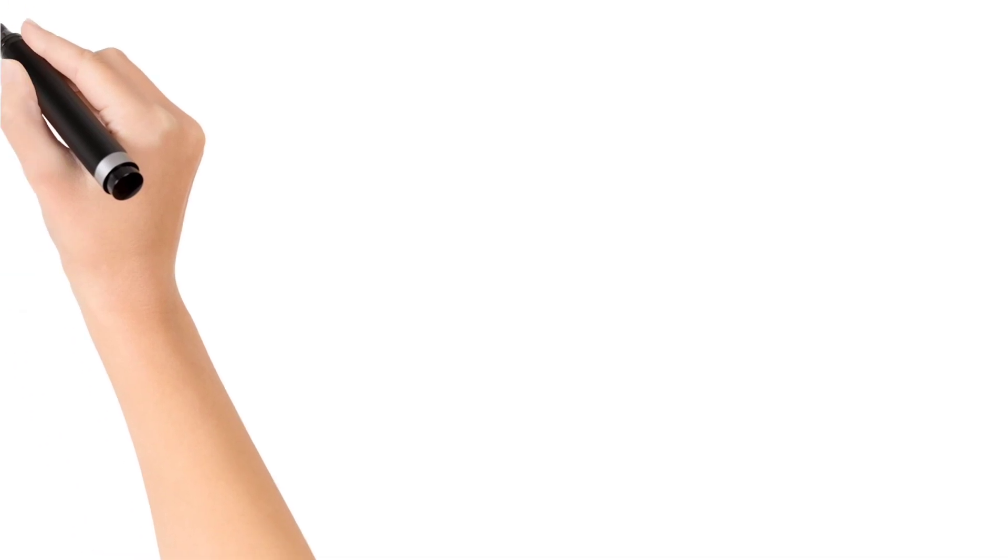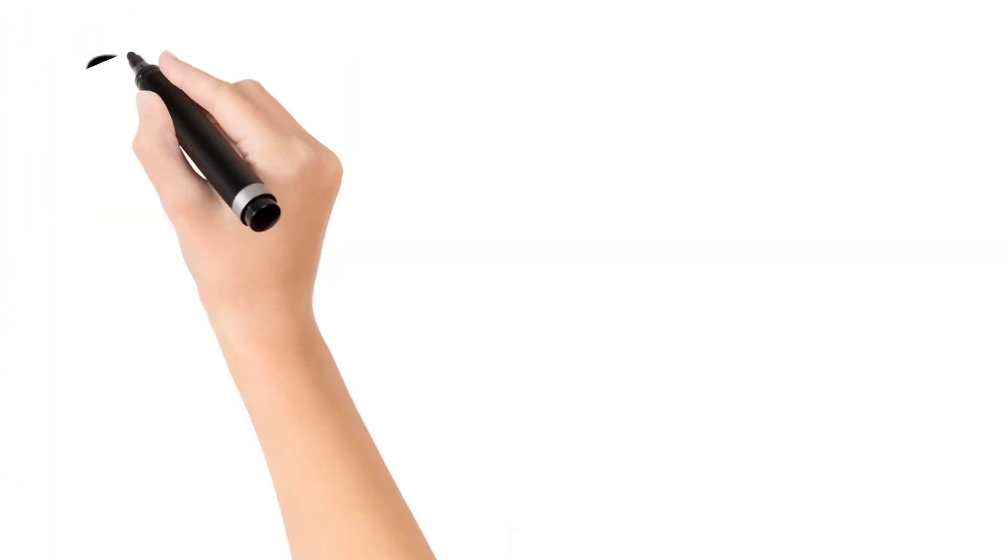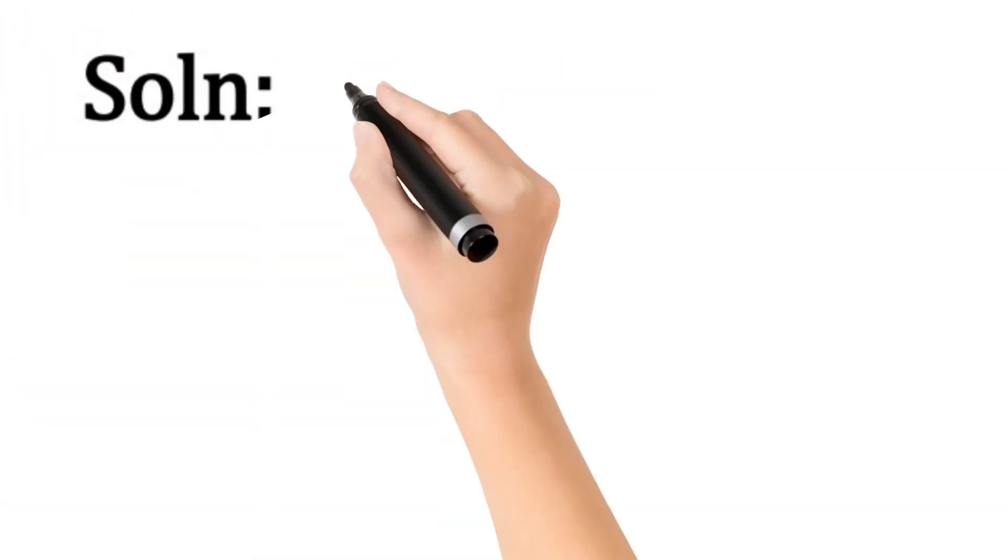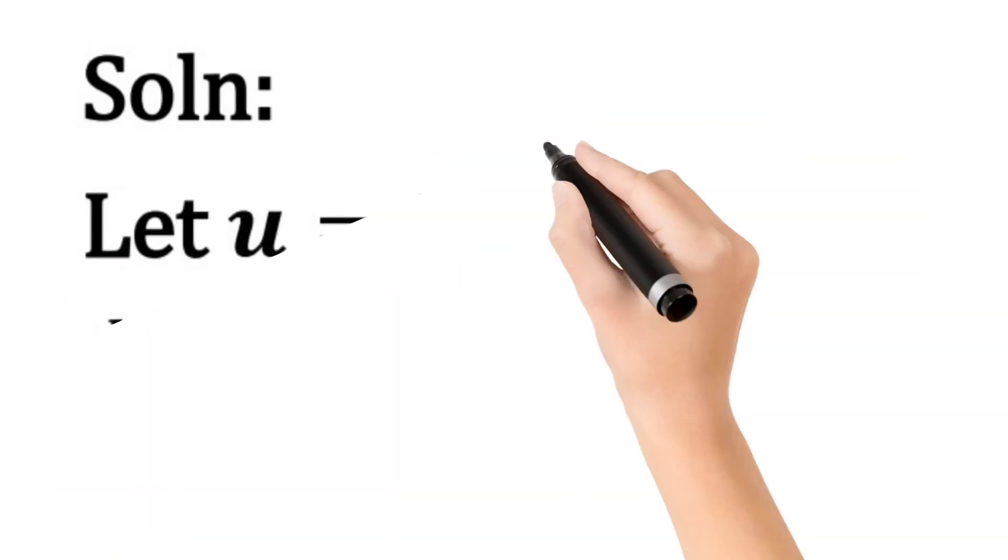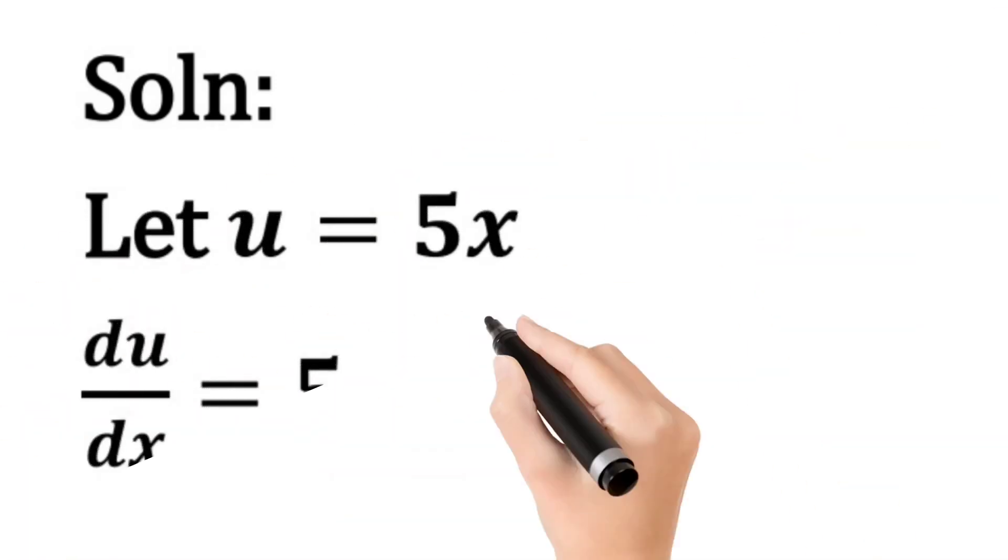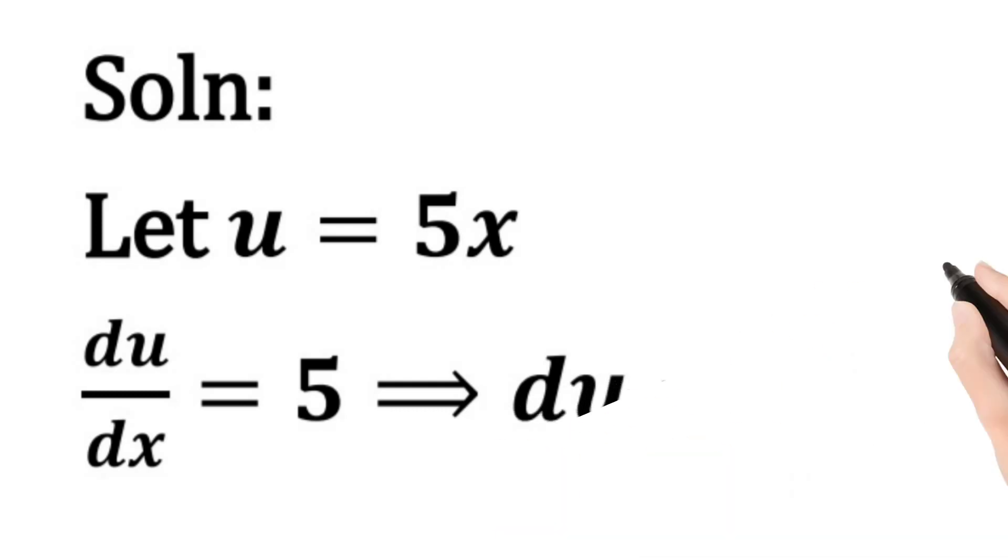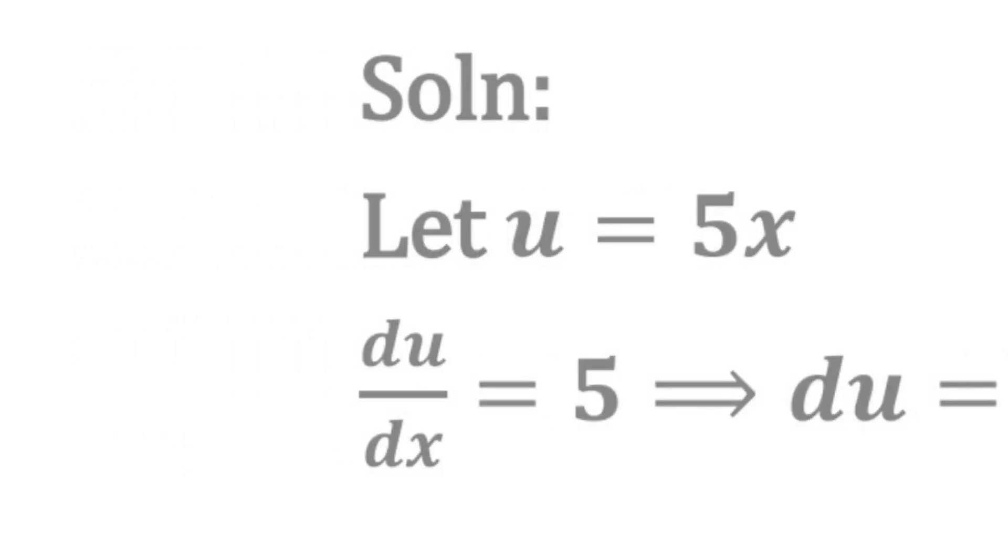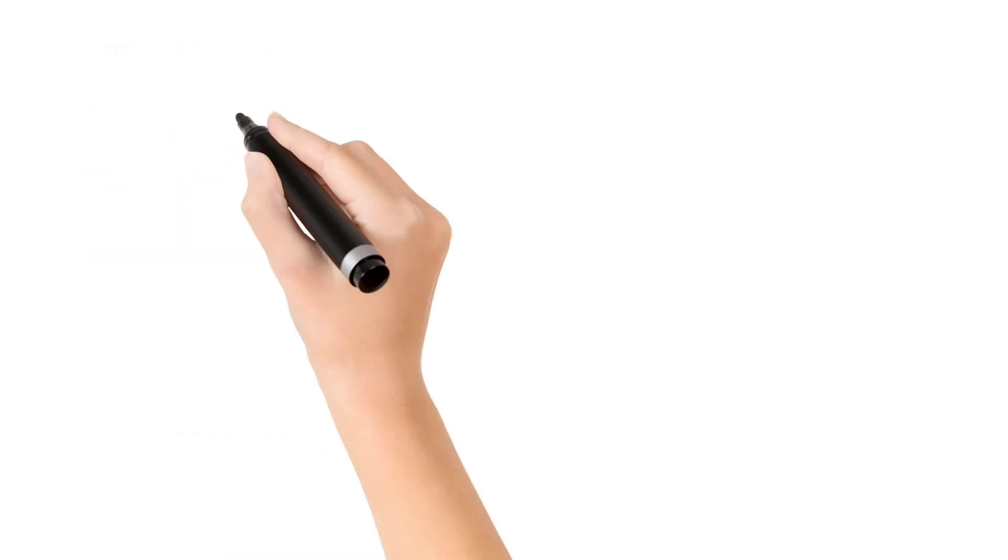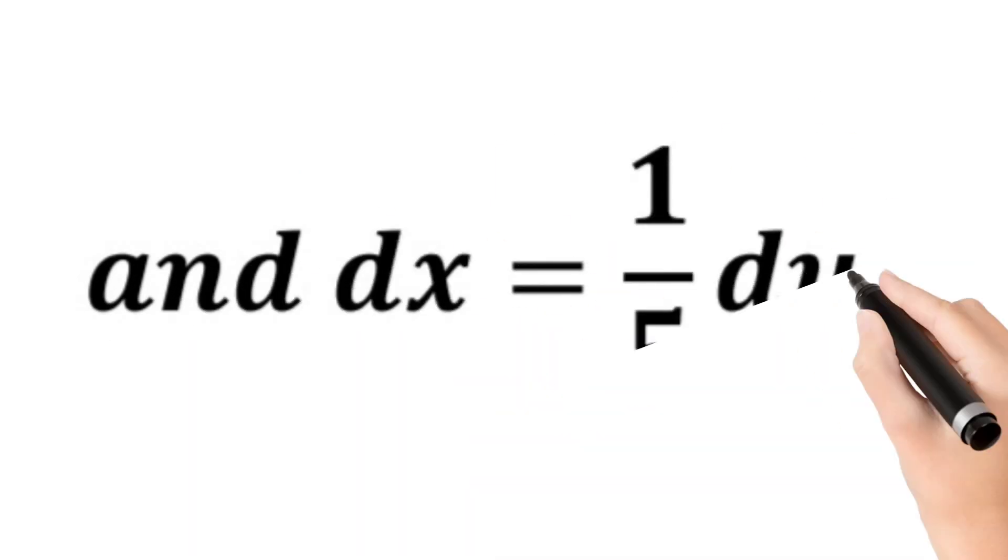We will make another substitution here. We will let u be equal to 5x. The derivative of u with respect to x, which is du/dx, is equal to 5. And that implies du is equal to 5 dx, and dx is equal to 1 over 5 du.